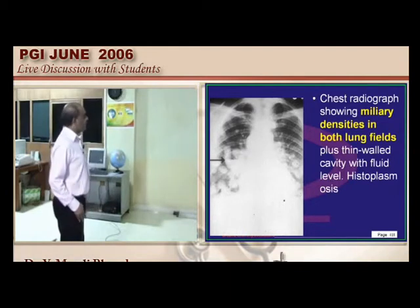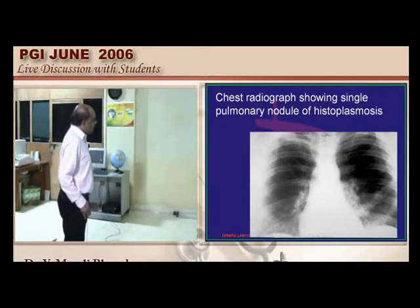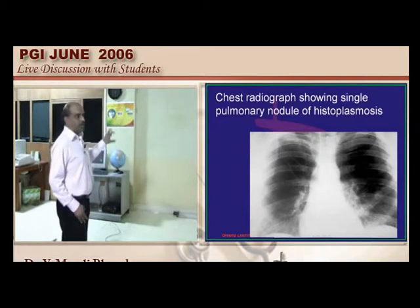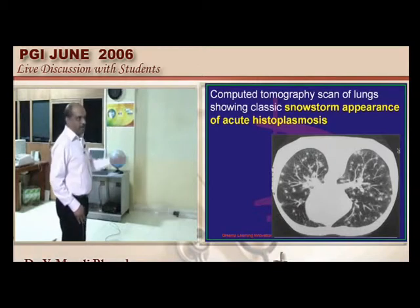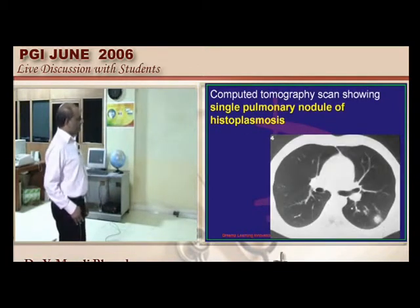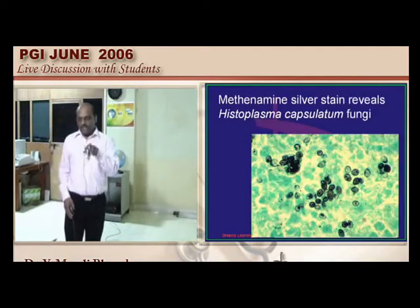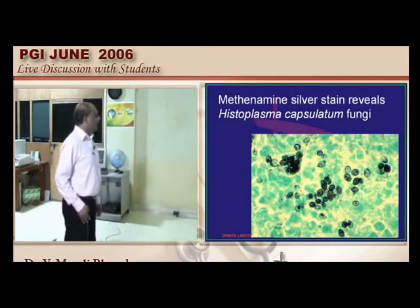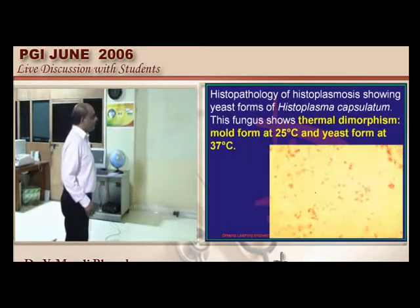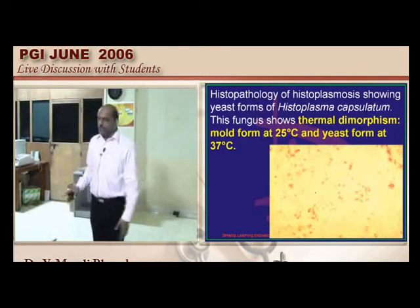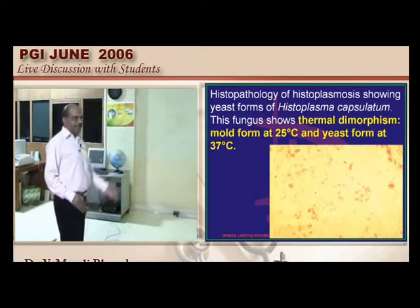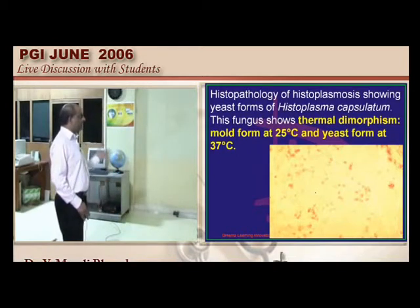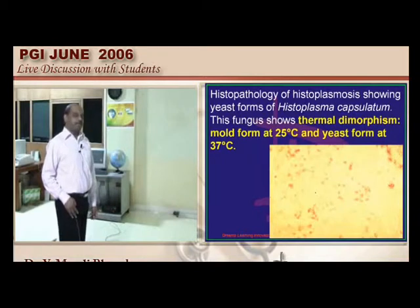Histoplasmosis can cause a single pulmonary nodule and a snowstorm appearance on CT in acute histoplasmosis. Methenamine silver stain is also used for staining Histoplasma capsulatum. The peculiar feature of Histoplasma is thermal dimorphism: mold form at 25°C and yeast form at 37°C.